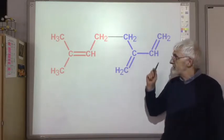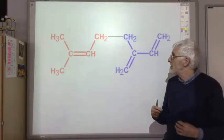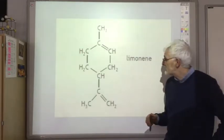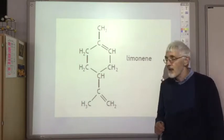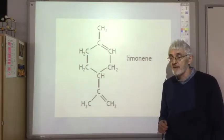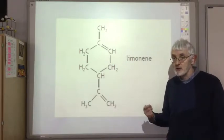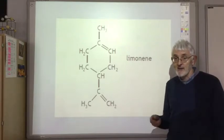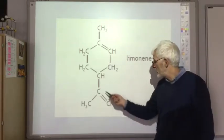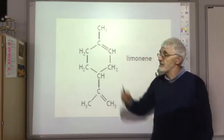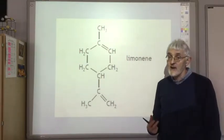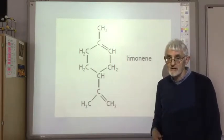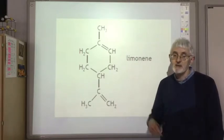This is called a linear terpene because they're joined kind of head to tail. You also get cyclic terpenes. Here's a cyclic terpene called limonene. Two common questions you get asked in the exam: firstly, how many isoprene units are joined together in this terpene? To answer that, count the number of carbon atoms: one, two, three, four, five, six, seven, eight, nine, ten. Each isoprene unit has five carbons, so if it's ten carbons, it must be two isoprene units.